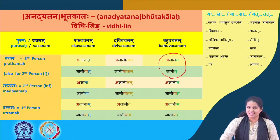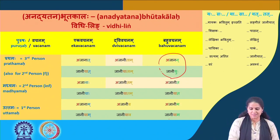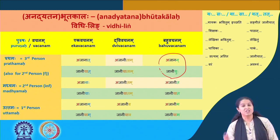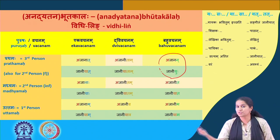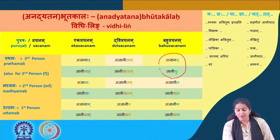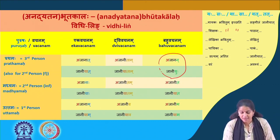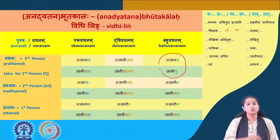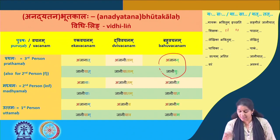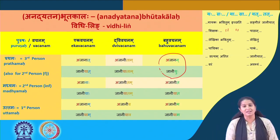Use this vidhiling table to make if-then sentences using the yaasa and yaatat construction. For example: yaha gayakaha bhavitum ichhati, saha sangeetam jaaniyat — one who wants to be a singer must know music. Yaha shikshakaha bhavitum ichhati, saha pathan jaaniyat — one who wants to be a teacher must know the lessons. Yaa lekhika bhavitum ichhati, saa lekhitum jaaniyat — she must know how to write. Yaa pachika bhavitum ichhati, saa pakam jaaniyat — she must know how to cook.